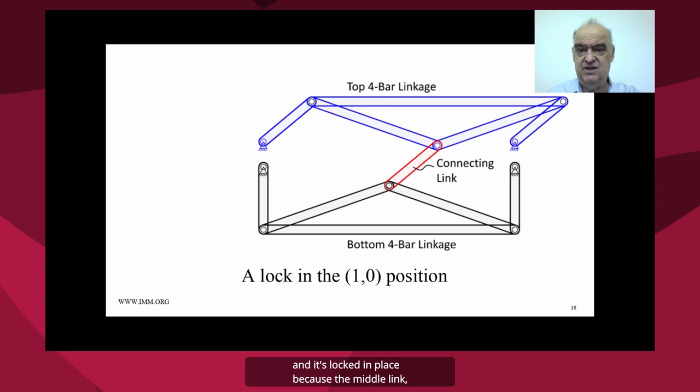And it's locked in place because the middle link, the one that's red, is now no longer able to allow the bottom triangular linkage to move. In other words, the bottom triangular linkage now has three links that connect it.